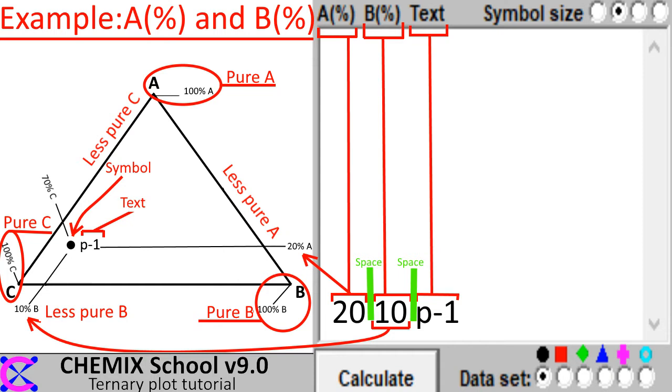In Chemex School we only need to insert two of the three components, namely A and B. A and B and the following text must be separated by at least one space, as illustrated by the green color.